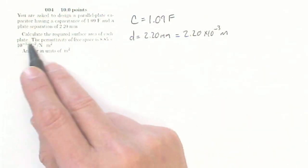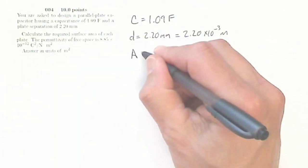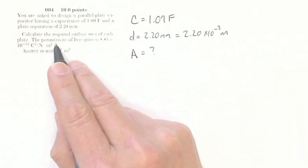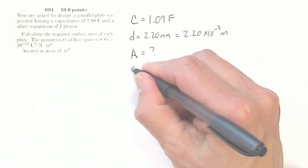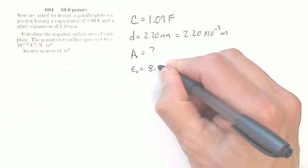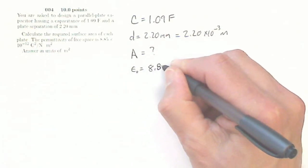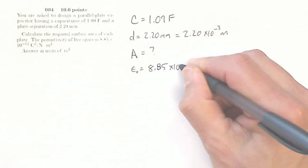Calculate the required surface area of each plate. So I'm looking for A equals question mark. The permittivity of free space is 8.85 times 10 to the minus 12. So that's my epsilon naught equals 8.85 times 10 to the minus 12.